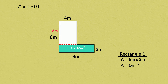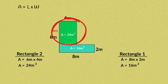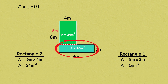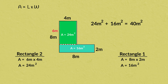Now we have both the length and the width, so we can calculate the area. 6 times 4 equals 24. The area of this part of our compound shape is 24 meters squared. Our compound shape is made up of two rectangles: one with an area of 24 meters squared and one with an area of 16 meters squared. We can add those two measurements together: 24 meters squared plus 16 meters squared equals 40 meters squared.